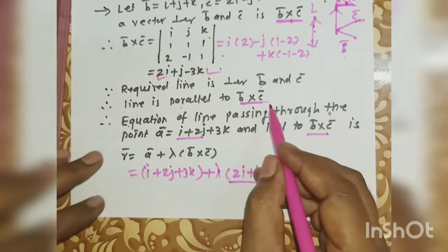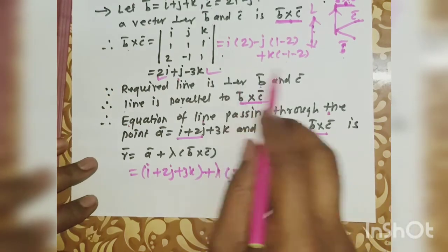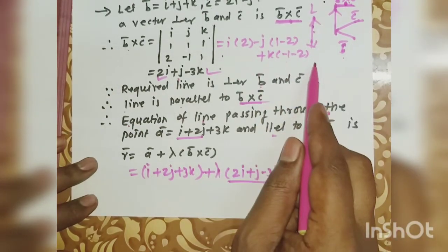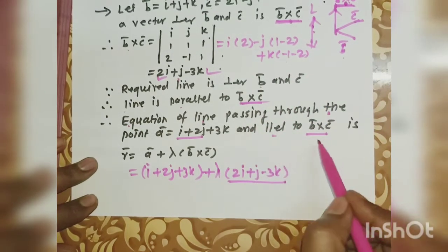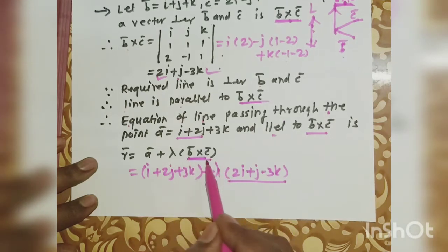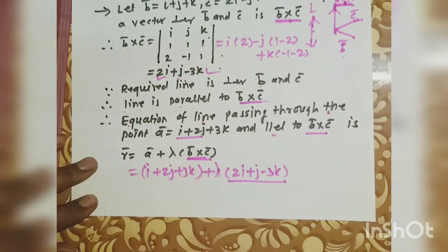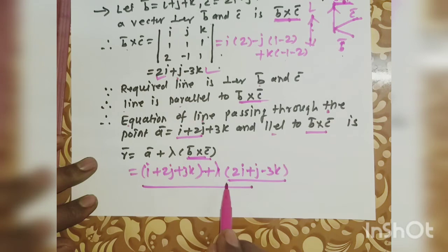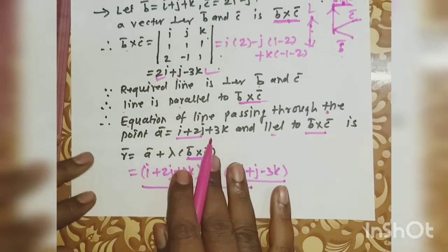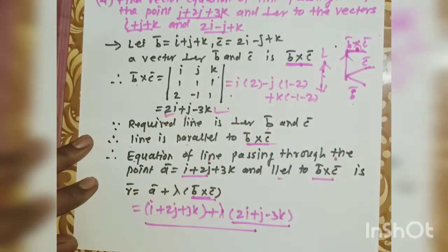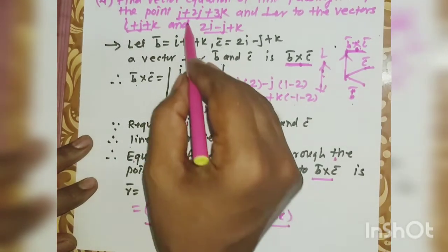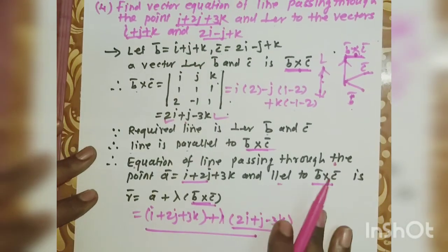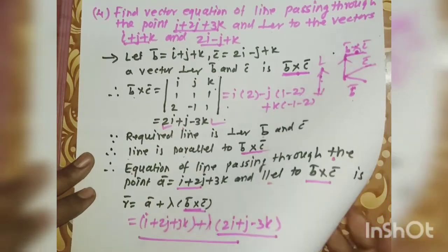If you calculate the cross product of the two given vectors, you get the direction vector of the required line, which is perpendicular to both. Then you can find the vector equation of the line perpendicular to these two vectors and passing through the given point.